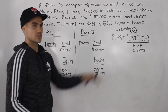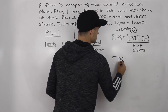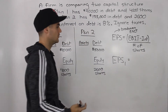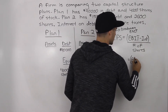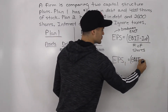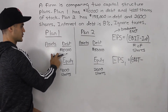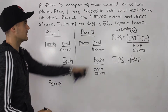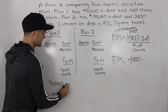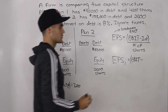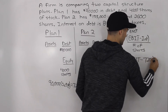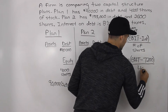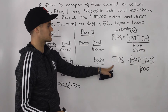Now we need to find an expression for earnings per share under both plans. For plan one: the EBIT we don't know — we're solving for that — and then we subtract the interest. Interest equals $90,000 times 8%, which gives us $7,200. So we subtract $7,200, then divide by the number of shares, which is 4,000. That gives us the EPS expression for plan one.